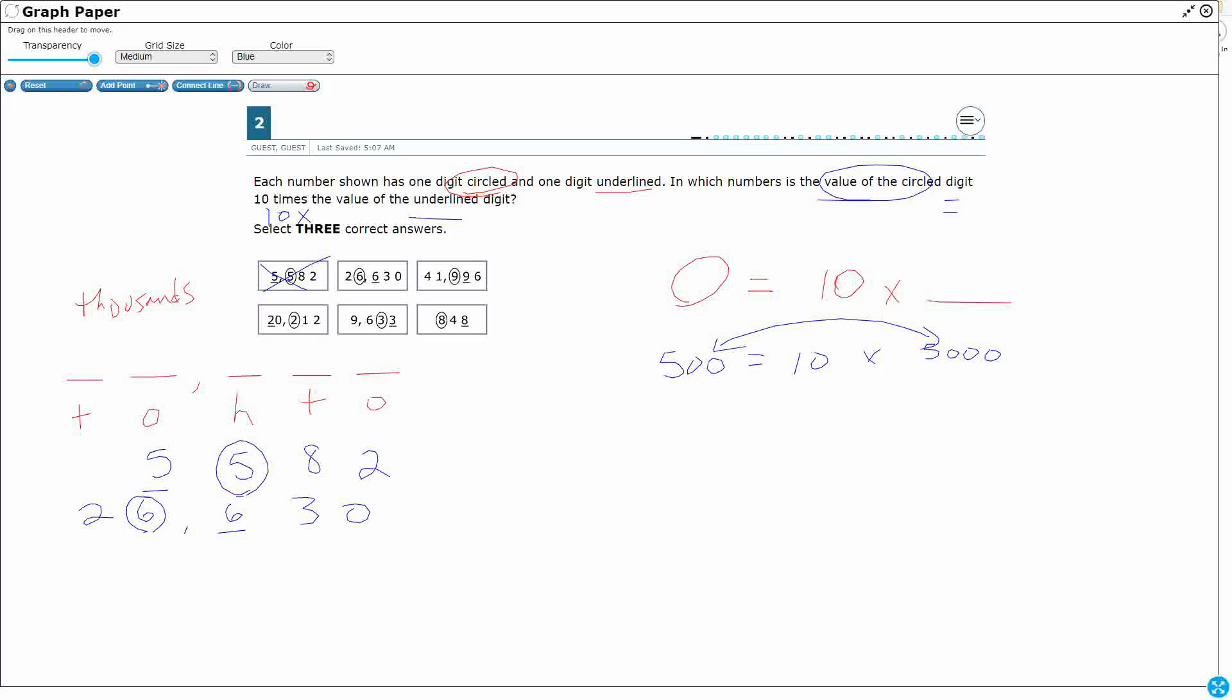So I've got a 6 in the thousands place, right? So that's going to be 6,000. And that needs to equal 10 times what is supposed to be underlined. Well, the 6 in the hundreds place is underlined. So that's 6 hundreds or 600. Now, does 6,000 equal 10 times 600?